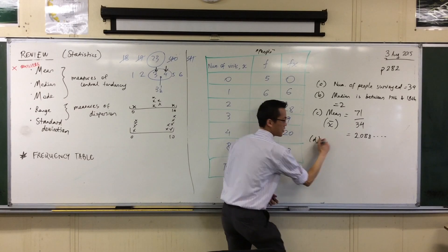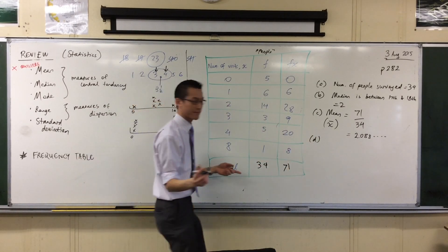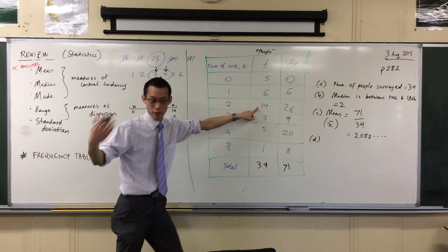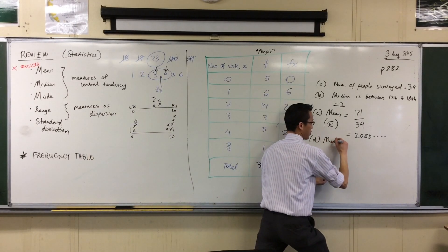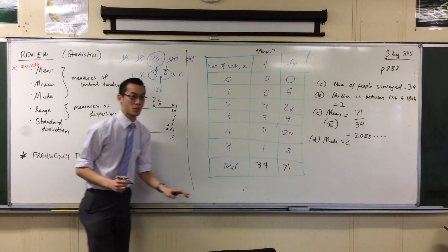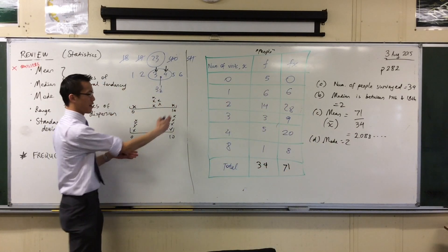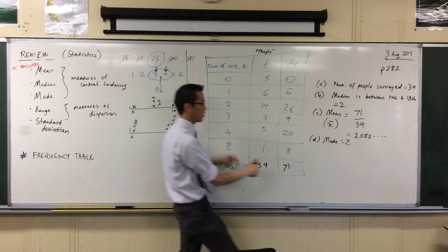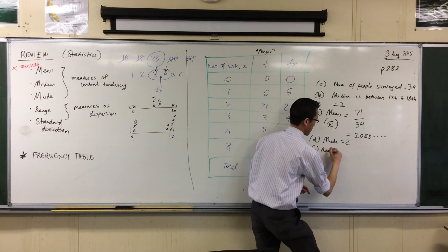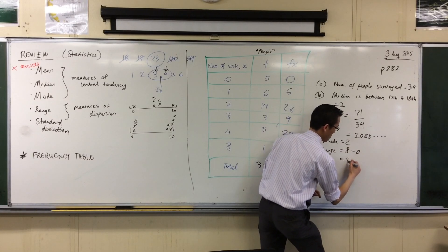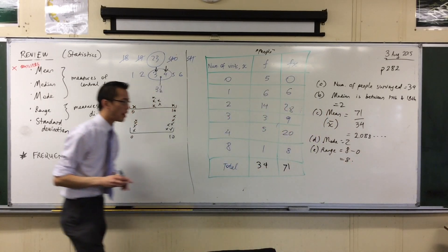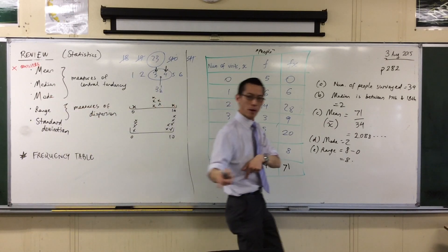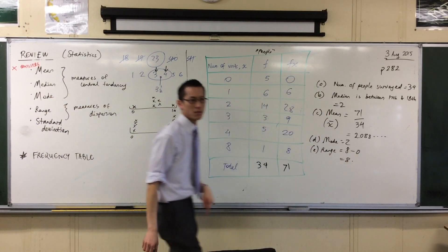Mode — that's an easy one. Most common. Which one's got the most? It's this one, because that's the most frequently occurring value. Mode is also 2. And last one, also a simple question: range is top take away bottom. So it's 8 take away 0, which is 8. It's helpful to write down that it's 8 take away 0 even though it doesn't change the number, because that shows you know where range comes from — it's composed of those two numbers.